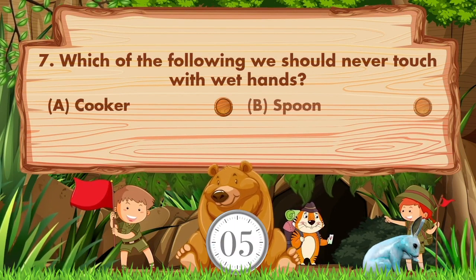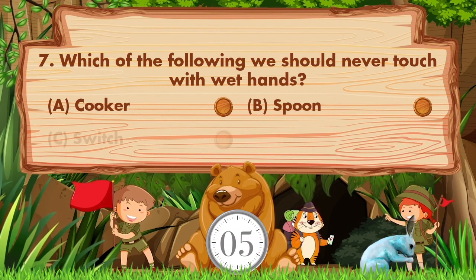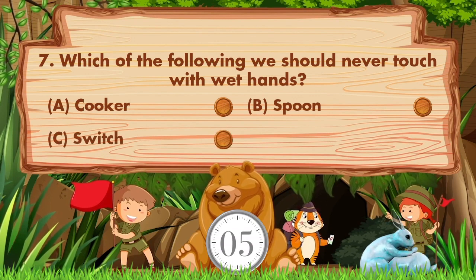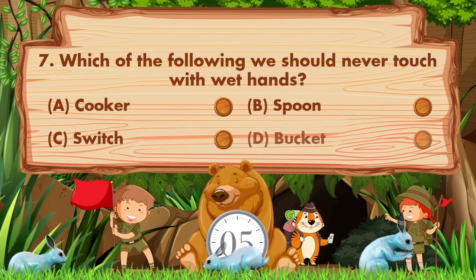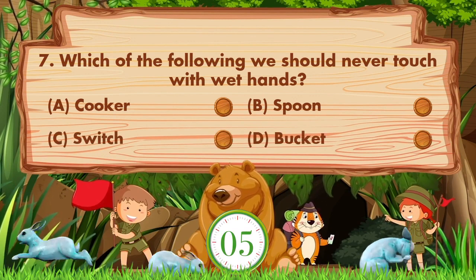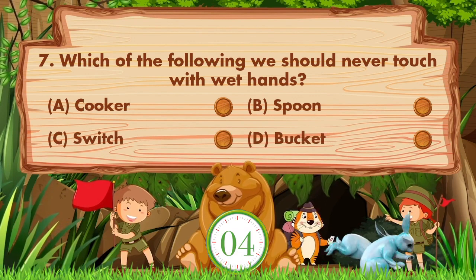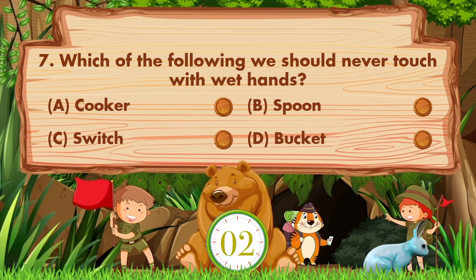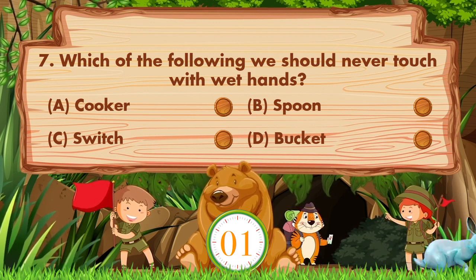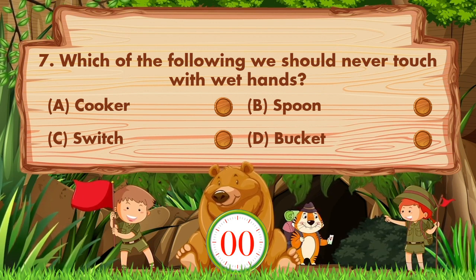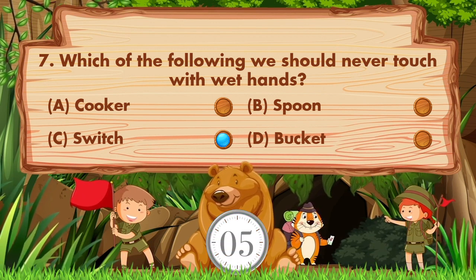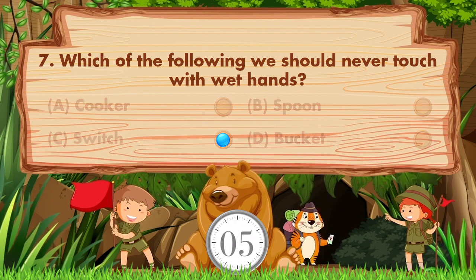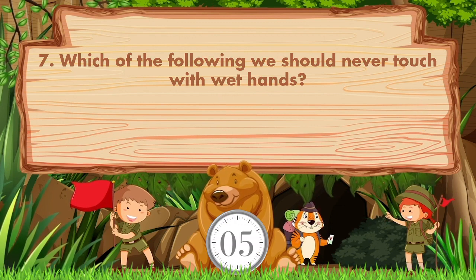Which of the following should we never touch with wet hands? Option A is cooker, B spoon, C switch, D bucket. Answer is option C: switch.